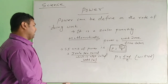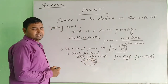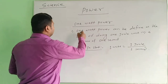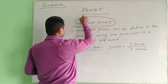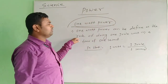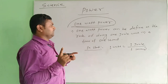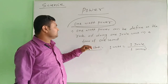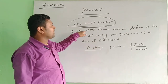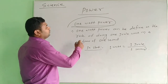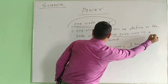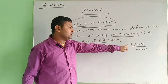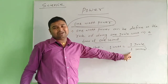One watt of power is defined as the rate of doing one joule of work in one second. So one watt power means one joule of work is done in one second. You have seen in various instruments that 'Watt' is written on them.